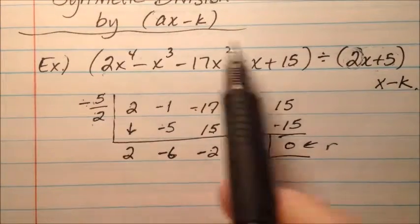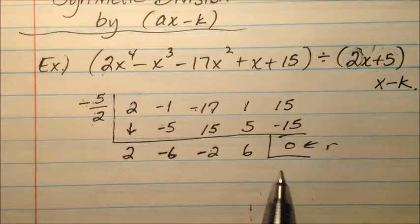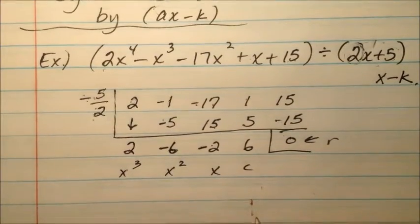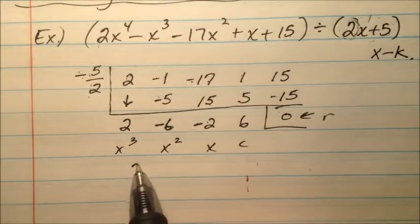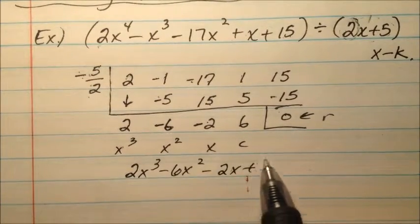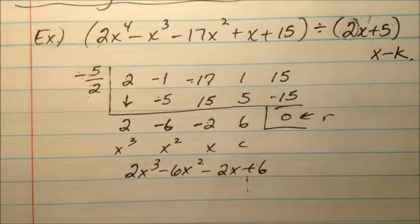So I had x to the 4th divided by a single x, so x cubed, x squared, x is my constant. So I could say 2x cubed minus 6x squared minus 2x plus 6 with remainder 0.